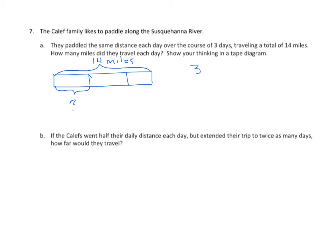We want to find out how far they traveled in one day. So 3 units equals 14. One unit equals 14 divided by 3. That's the same as 14 thirds. We can convert that into a mixed number. We simply take 14 divided by 3 and it goes in 4 times. We get a remainder of 2. So 4 and 2 thirds. They travel 4 and 2 thirds miles each day.